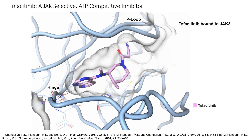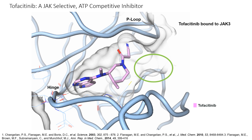This is tofacitinib in the same Janus kinase ATP binding site. The hinge region is now bound by the pyrrolopyrimidine portion of tofacitinib — it doesn't have an adenine, it's a pyrrolopyrimidine. It doesn't have a ribose, but the piperidine series provides the linkage so it can sit in the binding site. And there is no phosphorus — absolutely no source of energy. While JAK3 is occupied by tofacitinib sitting in the ATP binding site, Janus kinase 3 cannot produce the energy needed for its dependent chemical reactions.